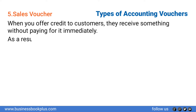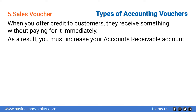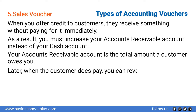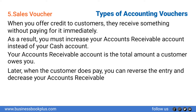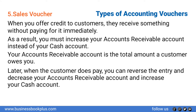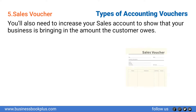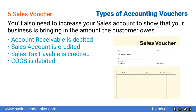When you offer credit to customers, they receive goods without paying immediately. As a result, you must increase your accounts receivable account instead of your cash account. When the customer does pay, you reverse the entry — decreasing accounts receivable and increasing the cash account. You also increase the sales account to show the amount earned. Here, accounts receivable and cost of goods sold are debited, while sales account, sales tax payable, and inventory account are credited.